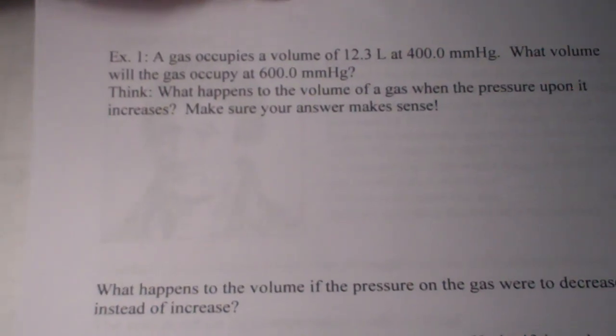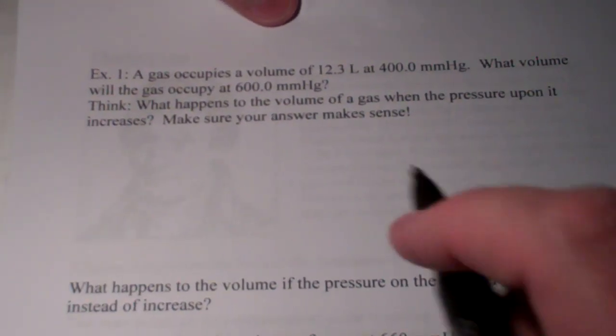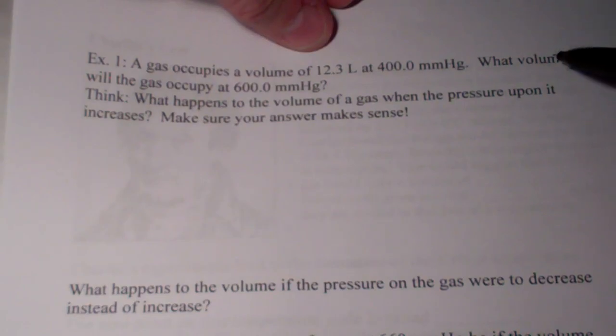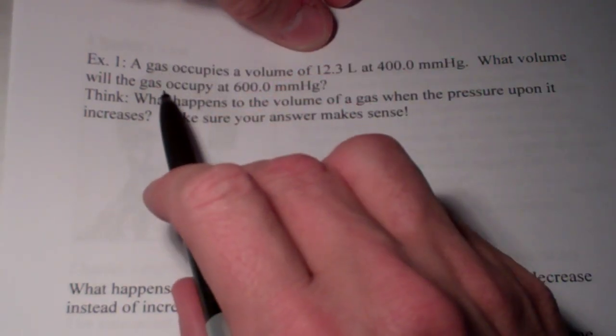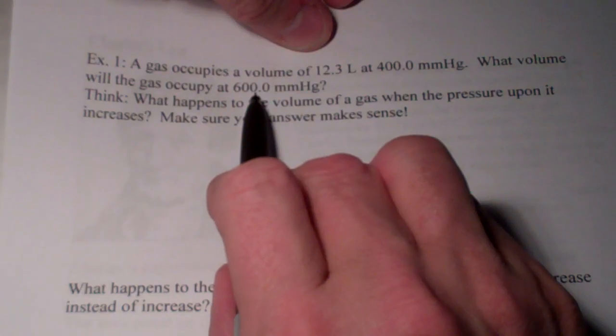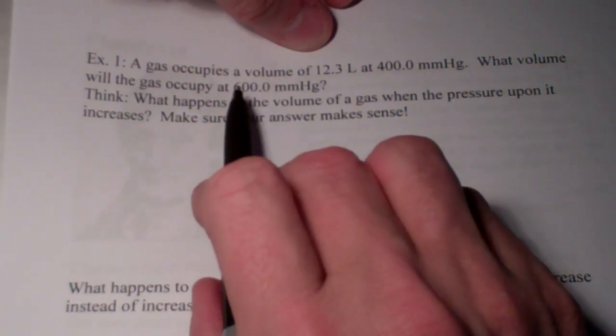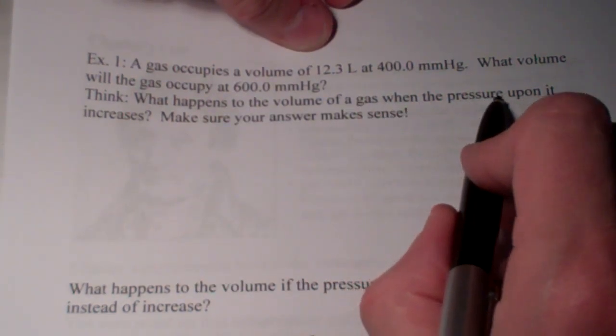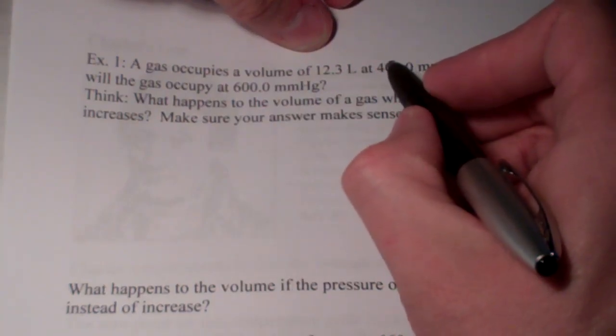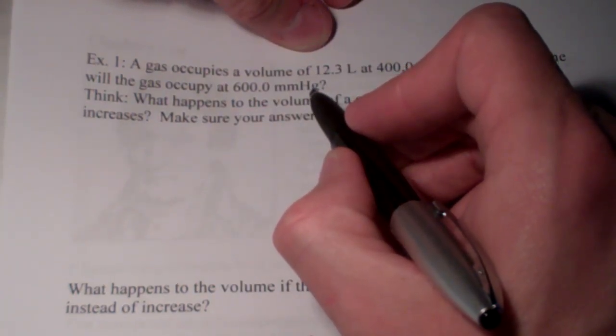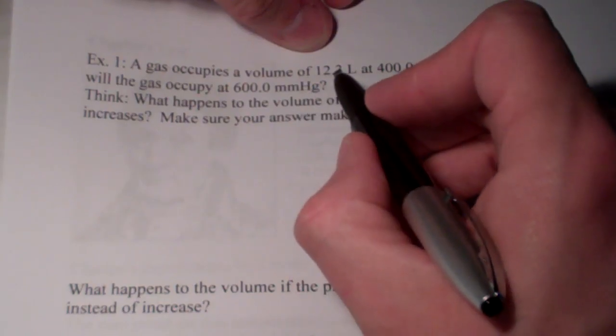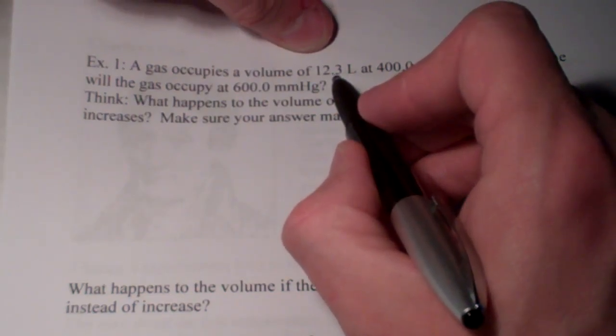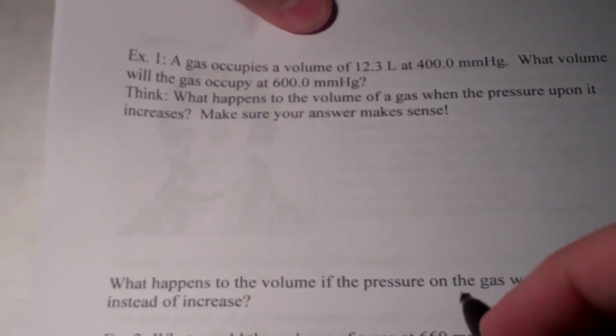Now, you might be familiar with this equation and we are certainly going to put that to use, but I'm going to show you another way to solve Boyle's Law problems besides using this plug-and-chug method with this P1 V1 equals P2 V2. Let's take a look at example one from our notes. Here we have a gas that occupies a volume of 12.3 liters. The pressure is 400.0 millimeters of mercury. I'm wondering what the volume of this gas will be when I increase the pressure. It's 600.0 millimeters of mercury.